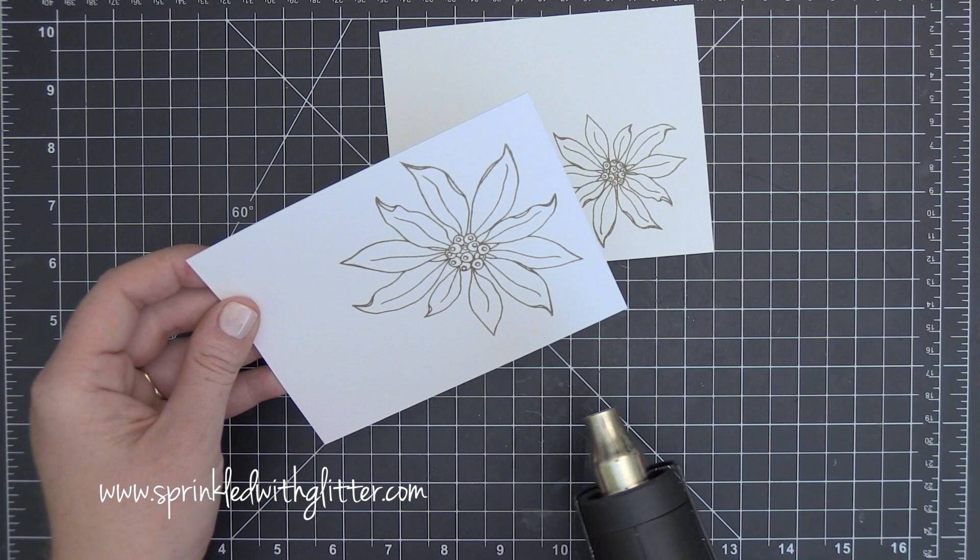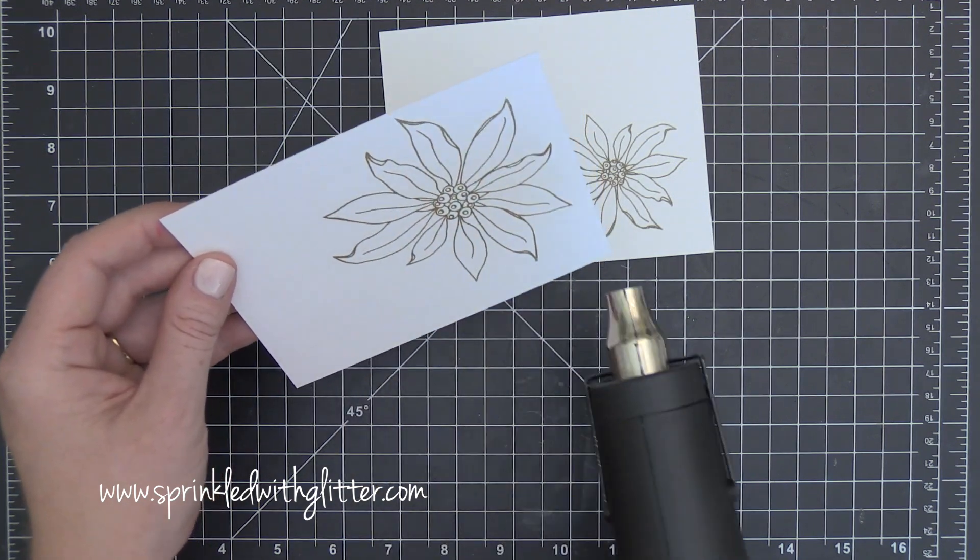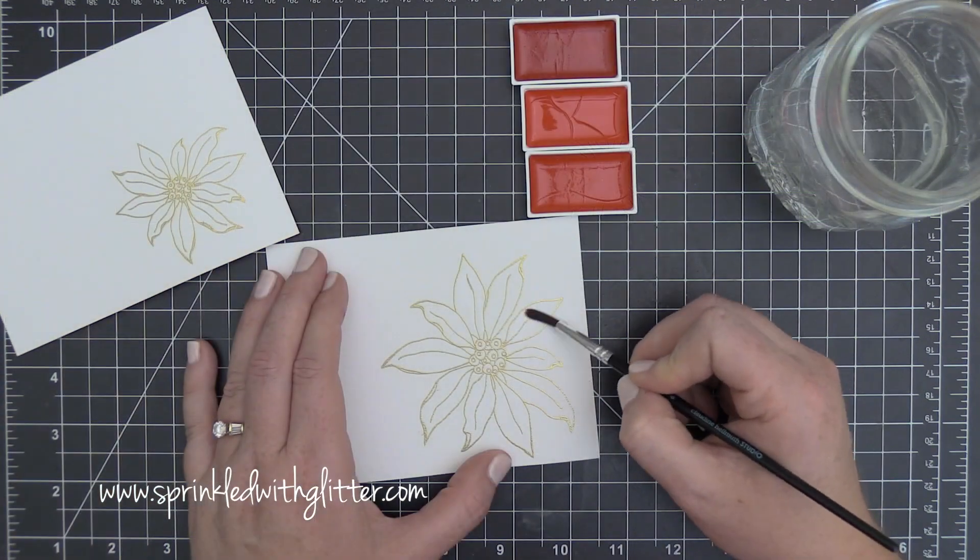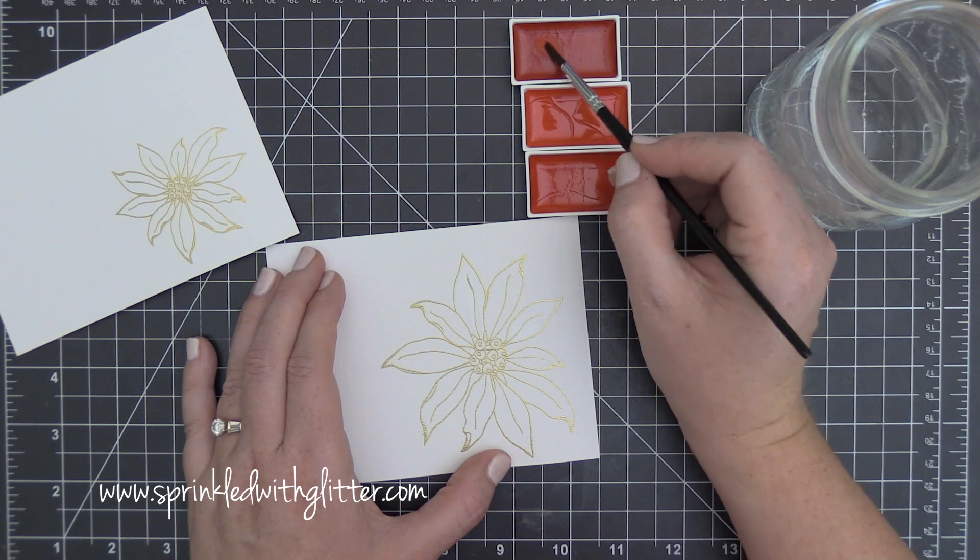Now when I'm heat setting these I like to allow my heat tool to heat up just a little bit. I find that I get a little less warping if I can do it rather quickly rather than exposing the paper to more heat than it really needs.